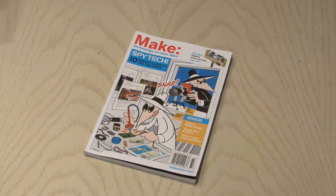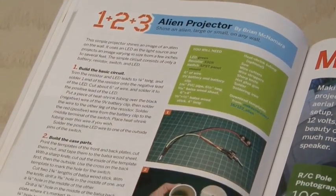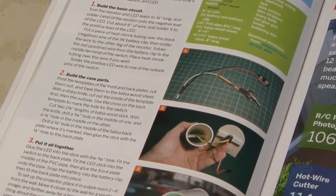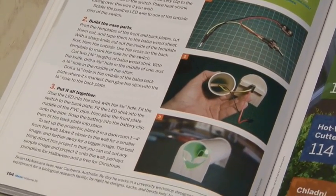This spooky alien projector project can be found in Make Volume 16, and it's by Brian McNamara. The parts cost about $5 total to build this alien projector, so let's get started.